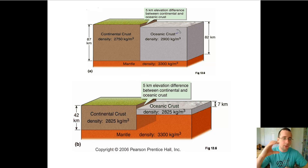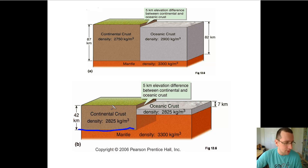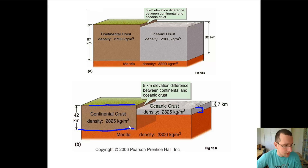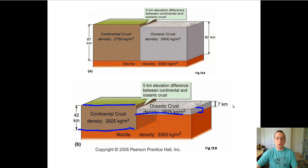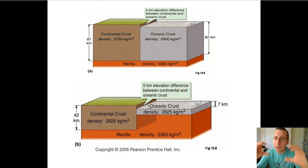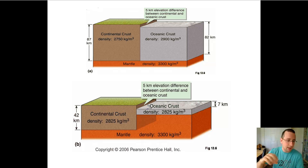They should float differently on the magma since they have different densities — not only should they have different volumes, but they should also float higher or lower. What we actually find is that the continental crust is both higher and much deeper than the oceanic crust. The Moho discontinuity under the continents is on average 42 kilometers below the surface, but under the oceans it's only about 7 kilometers. This difference in thickness and floating pattern creates the 5 kilometer difference in elevation between continents and ocean floors.